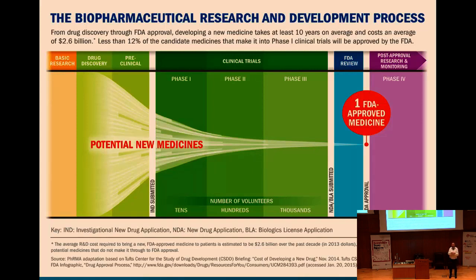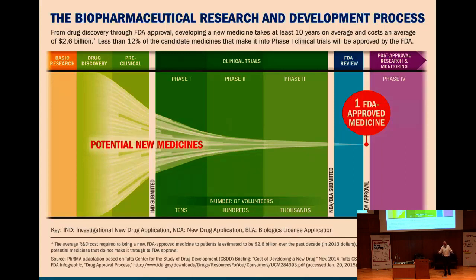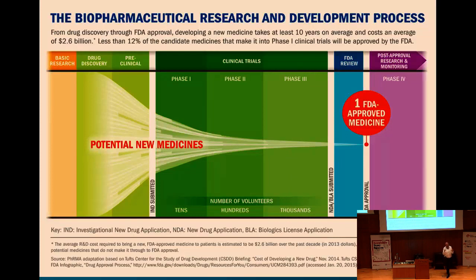Even after approval, drugs are followed up, and if bad side effects emerge they may be removed from market. To get one molecule to market you might start with 10,000 molecules across 100 different projects. The cost is estimated at one to five billion dollars — around two point six billion is a commonly cited figure. This isn't just the cost of work on one molecule; it's the total cost of all projects pursued, including failures, divided by the molecules that actually reach market.